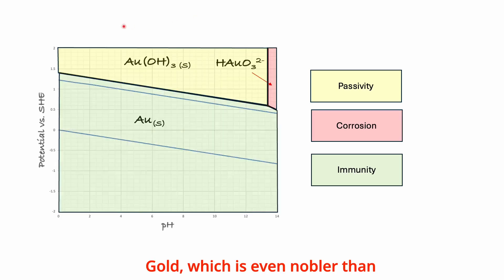Gold, which is even nobler than copper, is characterized by oxidation lines that are well above those associated with oxygen reduction and hydrogen evolution. This indicates a lack of thermodynamic force for corrosion under ordinary aqueous conditions, which explains why gold typically exists in its metallic state in nature.